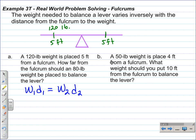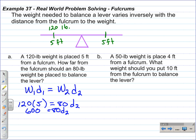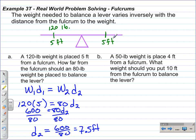Applying the equation to Part A: the first weight is 120 and the distance is 5 feet, so we substitute those in. On the other side, we have an 80-pound weight and we solve for the distance. Simplifying: 120 times 5 is 600, equal to 80 times the second distance. Dividing each side by 80, we get 600 divided by 80, which equals 7.5 feet. So we place the 80-pound weight 7.5 feet from the fulcrum to balance the lever.